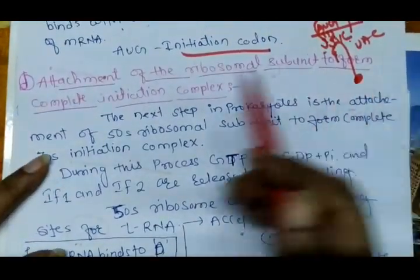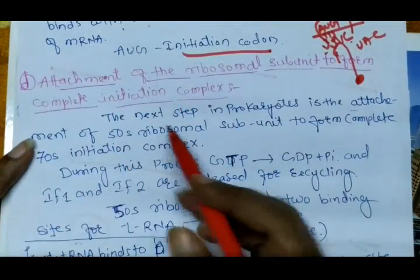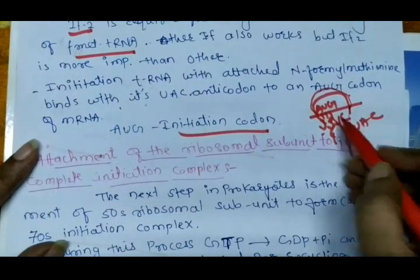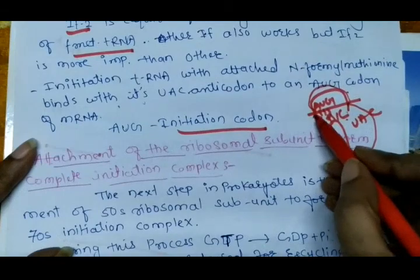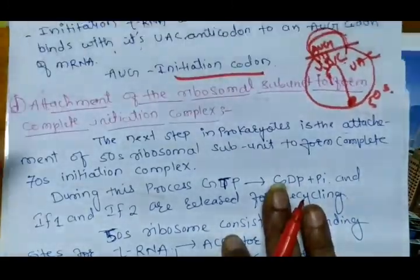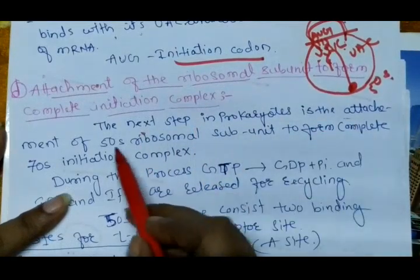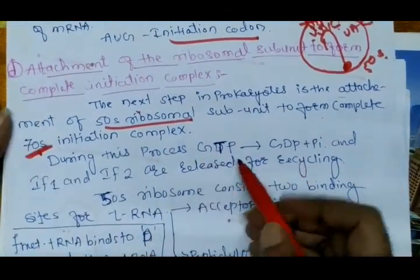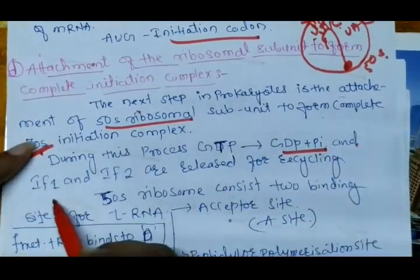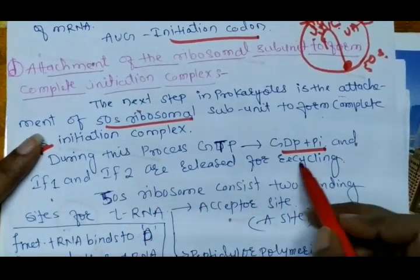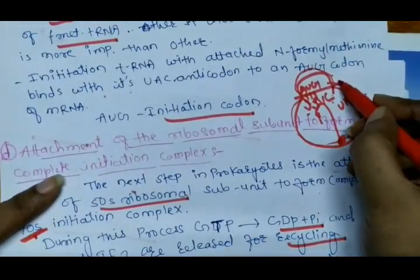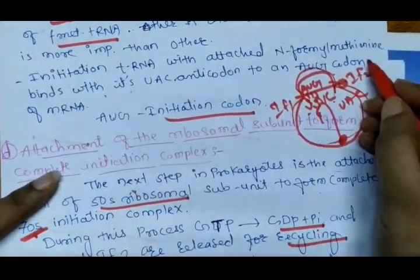The next step is the attachment of the 50S ribosomal subunit to form the complete initiation complex. The 50S subunit attaches below the 30S subunit to form the complete 70S initiation complex. During this process, GTP is converted to GDP and pyrophosphate, and initiation factors IF1 and IF2 are released for recycling.